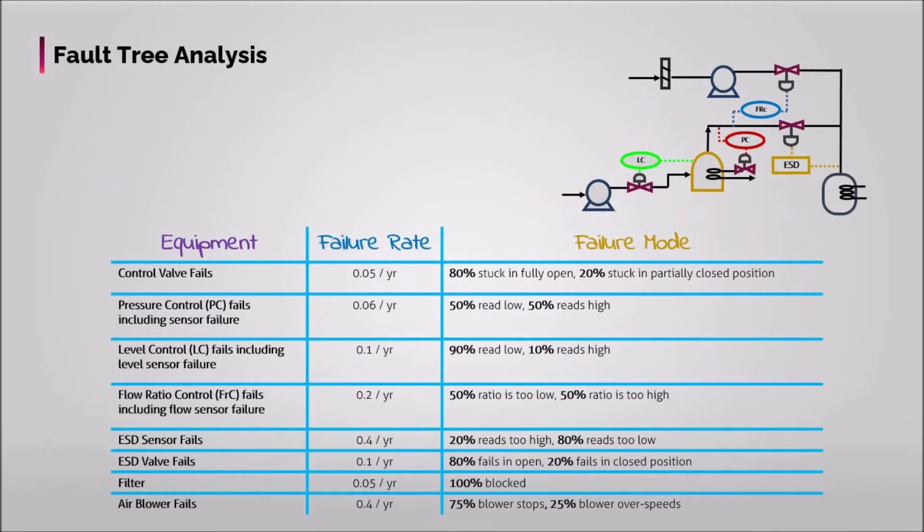The failure rate data here helps us to see the possible failures throughout this system. As can be seen, here the control valve, pressure control, level control, flow ratio control, then ESD sensor and valve, filter, and air blower fails are predicted to fail.